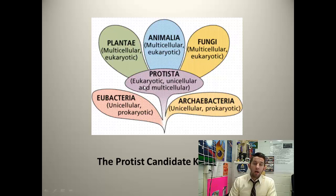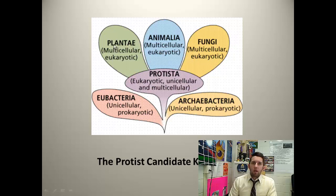Generally speaking, protists are eukaryotic. They're unicellular and multicellular — mostly unicellular, but there are some that are multicellular, and some that are colonial so they act multicellular. And from the protists came the rest of the domain Eukarya: came the plants, came the animals, and came the fungi.